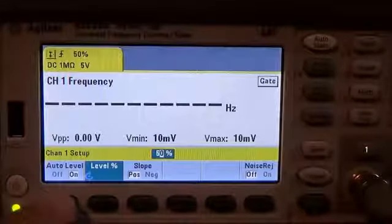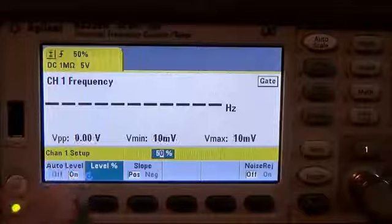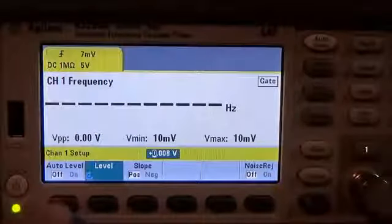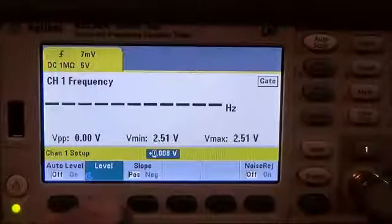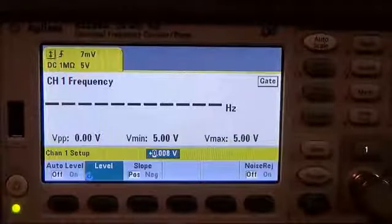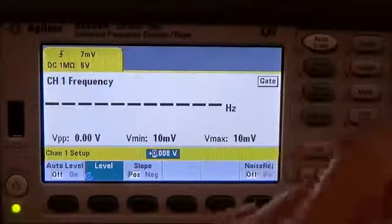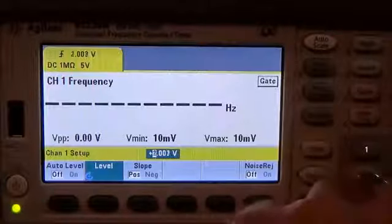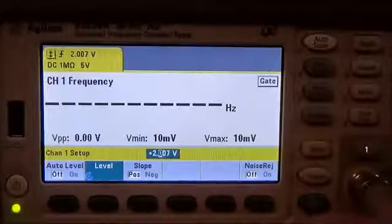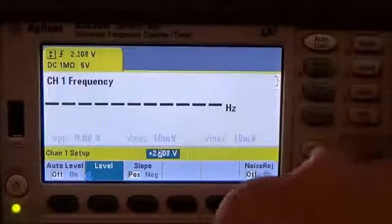So if we press the auto level key it toggles between on and off, and then we can go in and set a level. Since we have a zero to five volt signal we can actually go ahead and increase this to say two and a half volts so we'll be right at the midpoint.